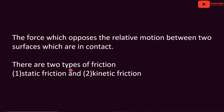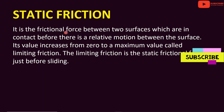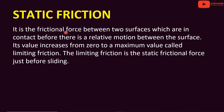There are two types of friction: static friction and kinetic friction. Static friction is the frictional force between two surfaces which are in contact before there is a relative motion between the surfaces. Its value increases from zero to a maximum value called limiting friction. The limiting friction is the static frictional force just before sliding.